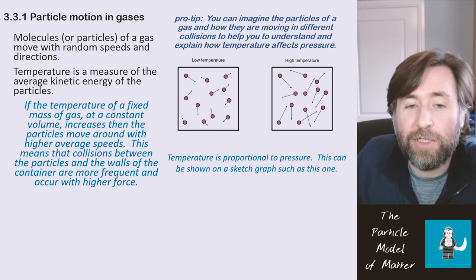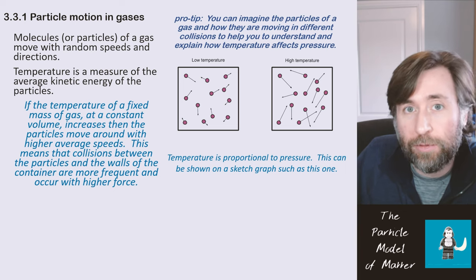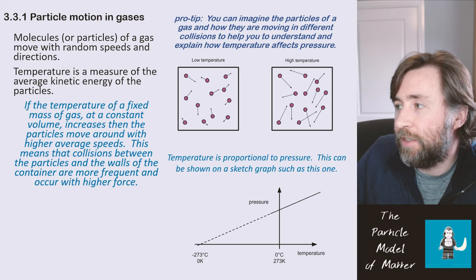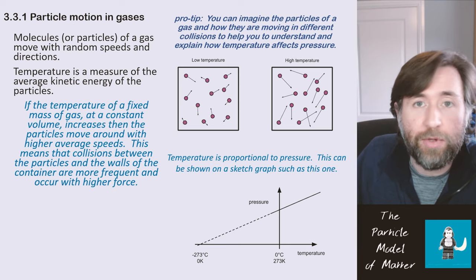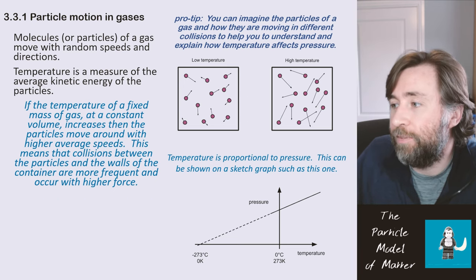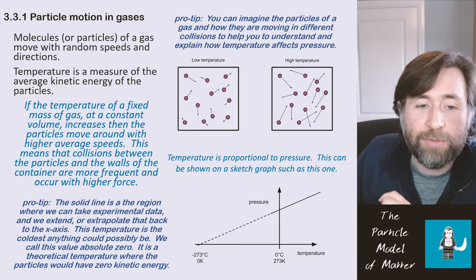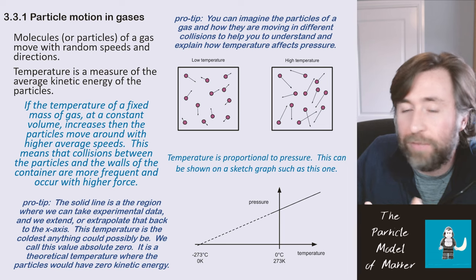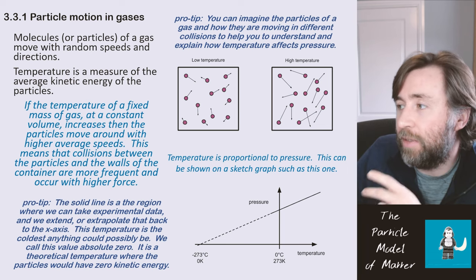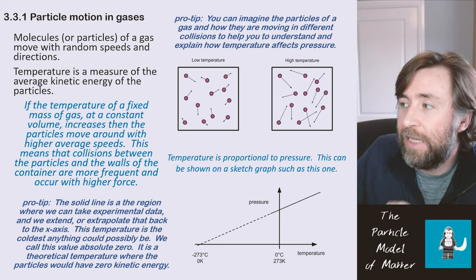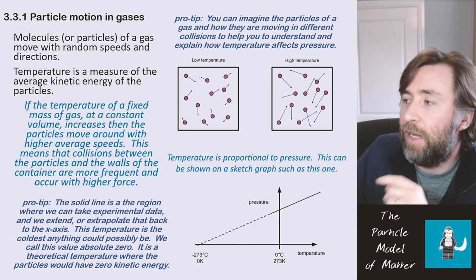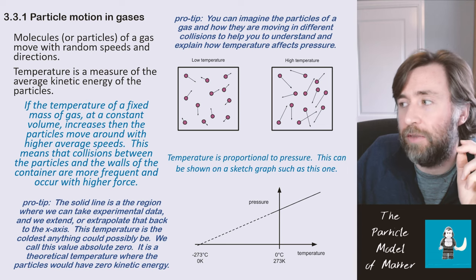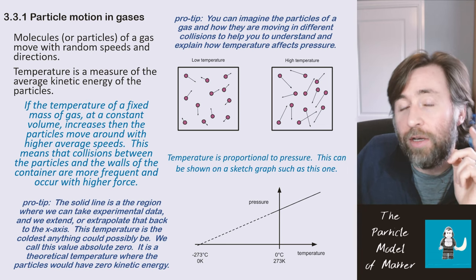Temperature is actually proportional to pressure — if you double the temperature, you also double the pressure. This can be shown on a sketch graph. You need to remember that higher temperature means higher pressure. We do this experiment in the lab at normal temperatures above freezing, and that's what the solid black line in this graph represents — the actual experimental data.